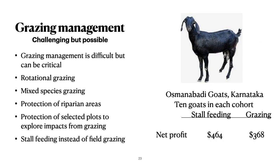One of the things that can be helpful is developing a grazing management plan that provides protection for plants in the ecosystem. This can be done by rotational grazing, mixed species grazing, using confined livestock instead of open grazing. Protection of riparian areas or parts of riparian areas can be critical. Protection of selected plots will provide a better understanding of what the grazing effects are. In some of our projects we used exclosures and enclosures to look at the effects of grazing, and we were surprised to see how big an impact rabbits were having. The Osemanbadi goats of Karnataka are dryland-adapted goats, and the study found that farmers could make more by stall feeding than by grazing, making a big difference on environmental impacts.